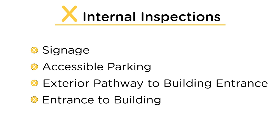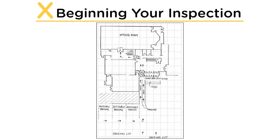Beginning your inspection. An accessible route is barrier-free. According to the building code, barrier-free design means that a building and its facilities can be approached, entered, and used by persons with physical or sensory disabilities. The route can include ramps, curb cuts, and elevators, but the transition from one area to another must be barrier-free.